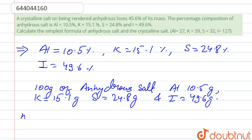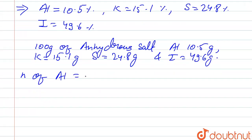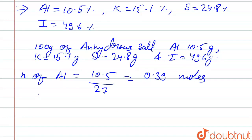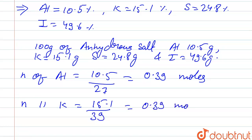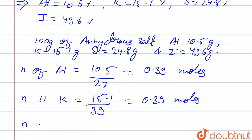We calculate the number of moles using the formula: moles = given mass divided by molar mass. Number of moles of aluminium: 10.5 divided by 27 equals 0.39 moles. Number of moles of potassium: 15.1 divided by 39 equals 0.39 moles.